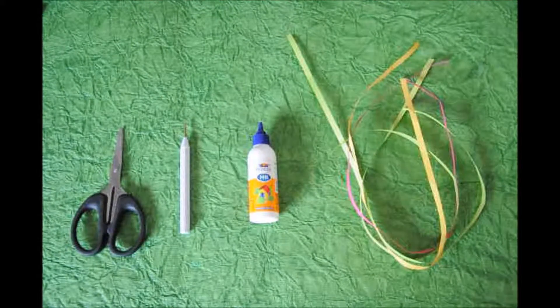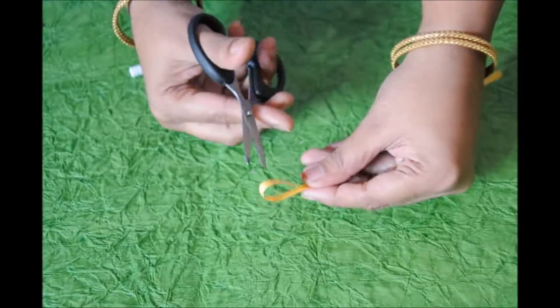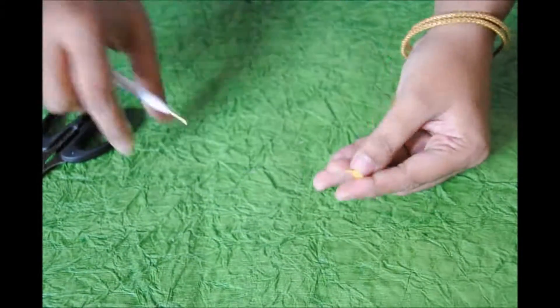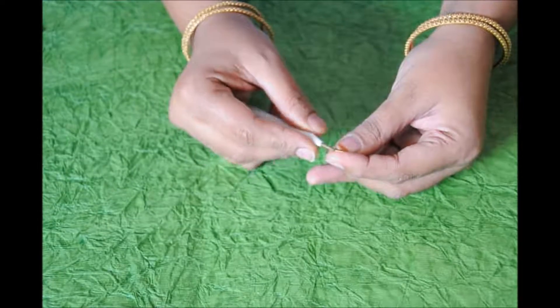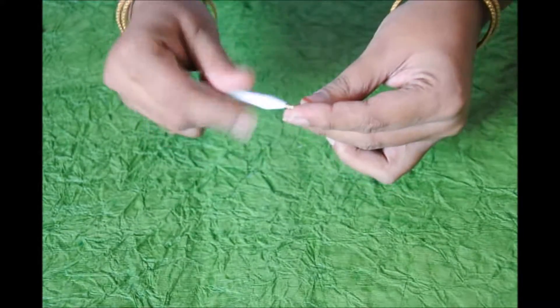If you don't have a quiller, just sleeve the toothpick for half a centimeter on one side. Take the yellow color quilling strip and cut it into half. Insert the quiller and start rolling it till the end in a circular way.